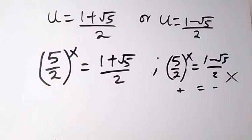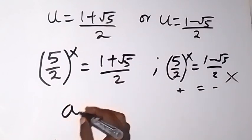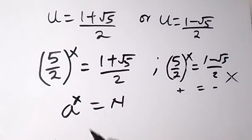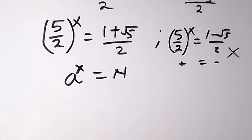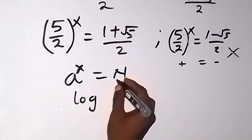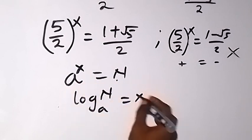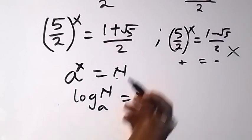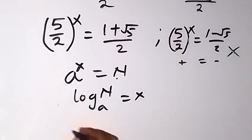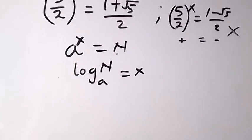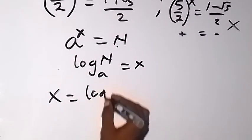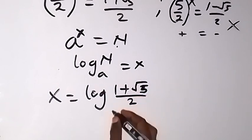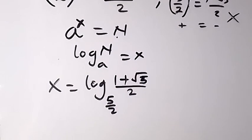So we work with the positive case. Recall: when we have a raised to power x equals n, we can change from index form to logarithmic form, and we get log base a of n equals x. Applying the same principle here, that gives us log base (5/2) of (1 plus root 5 over 2) equals x. So x equals log base (5/2) of (1 plus root 5 over 2).